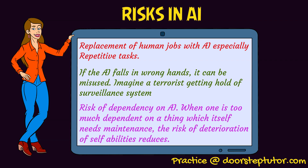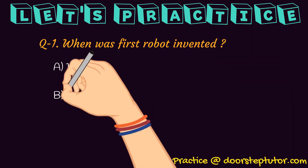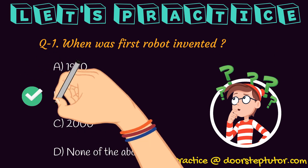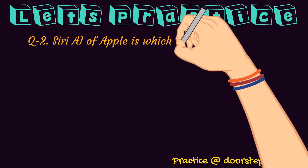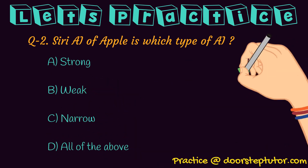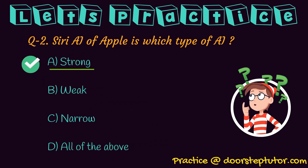Let us practice some questions. When was the first robot invented? Options: 1970, 1973, 2000, or none of the above. We discussed that in 1973 the first Shakey robot was developed, so the correct answer is B. Second question: Siri from Apple is which type of AI — strong, weak, or narrow? We discussed it is a strong AI because it listens to us and fixes meetings, alarms, and schedules accordingly, reminding us at the proper time.